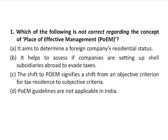The question asks us to choose the incorrect statement regarding Place of Effective Management (POEM). The first statement says it aims to determine a foreign company's residential status — this is correct. The second says it helps assess if companies are setting up shell subsidiaries abroad to evade taxes — also correct. The third says the shift of POEM signifies a shift from an objective criterion to a subjective criterion for tax residence — also correct. The fourth says POEM guidelines are not applicable in the country — this is wrong.